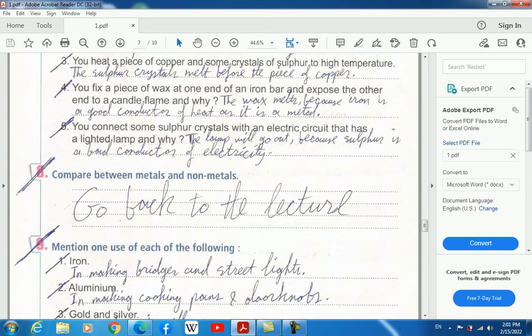You heat a piece of copper and some crystals of sulfur to high temperature. The sulfur crystals melt before the piece of copper.